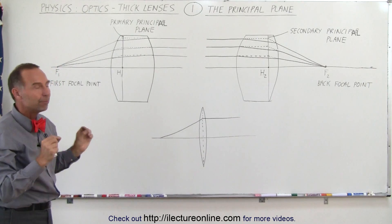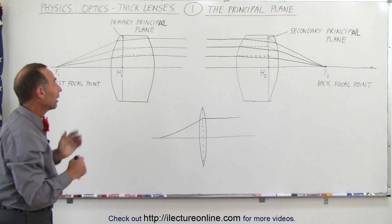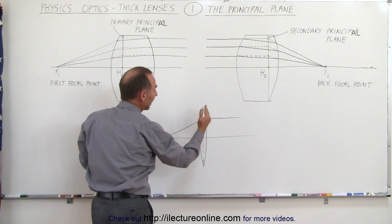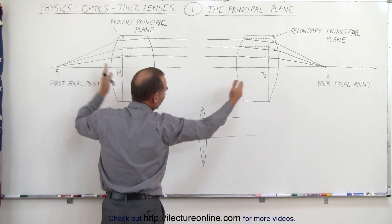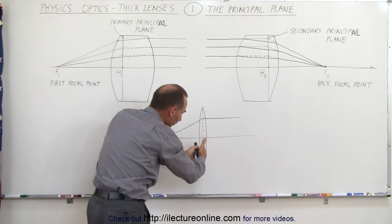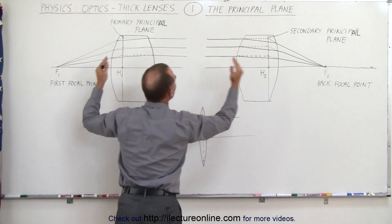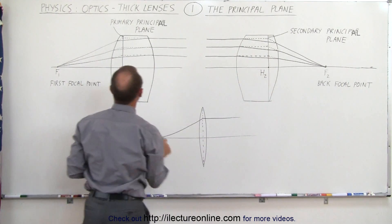So those are very important points on the lens. Now notice in a thin lens, both the front and the back, or the primary and the secondary principal planes, really fall on the very same location, which is not the case with real lenses.